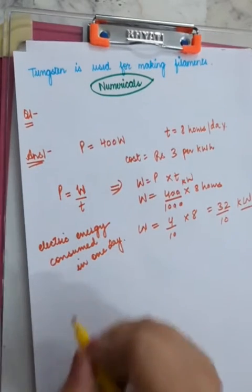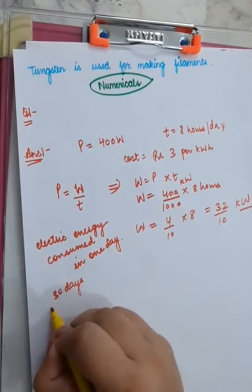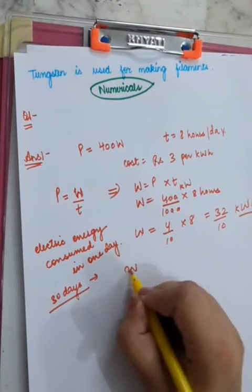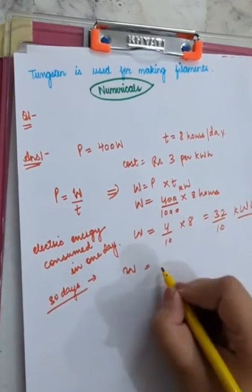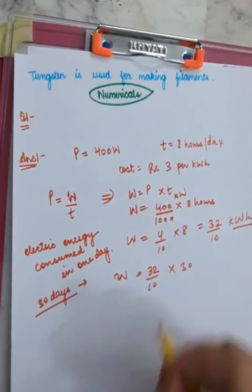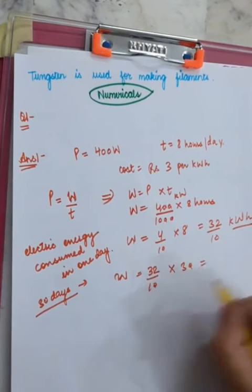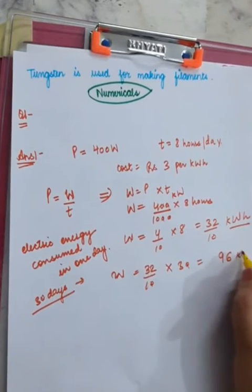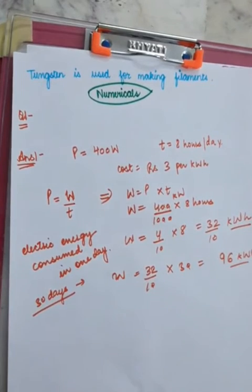What about 30 days? Electrical energy consumed in 30 days, that will be W, that will be 32 upon 10 into 30. So I am going to get 3 twos are 6, 3 threes are 9, 96 kilowatt hour is my answer. It is as simple as that.